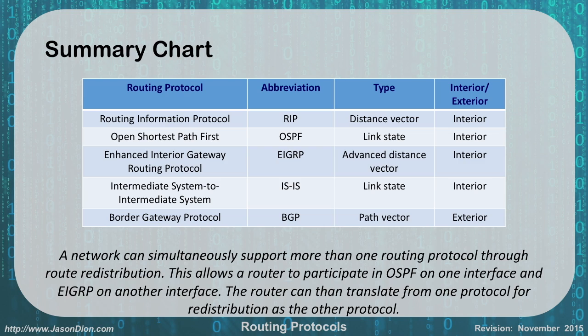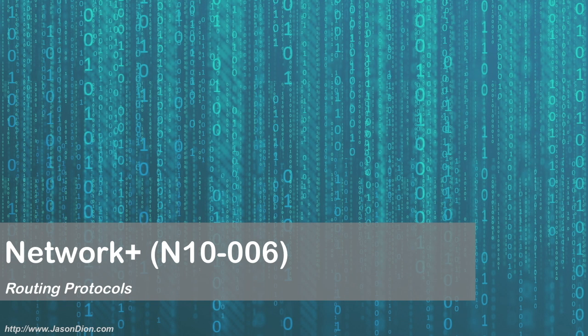In summary, we have RIP, OSPF, EIGRP, IS-IS, and BGP. They differ by type — distance vector or link state — and whether they're interior or exterior. They're all interior with the exception of BGP. Also remember, your network can support more than one routing protocol through route redistribution. A Cisco router running EIGRP can translate and send it out as OSPF for other routers to use, allowing hybrid networks. And that covers the basics of routing protocols.